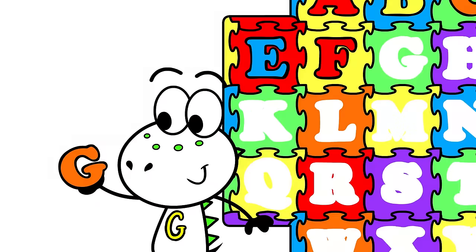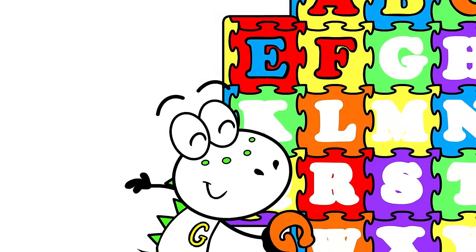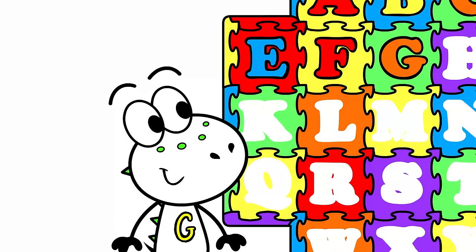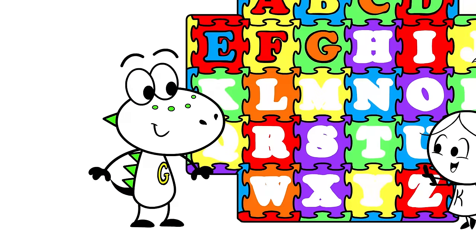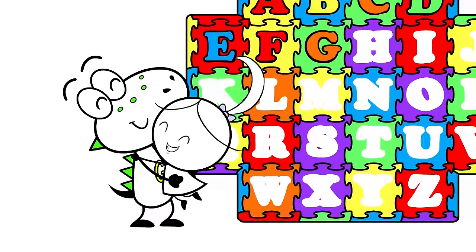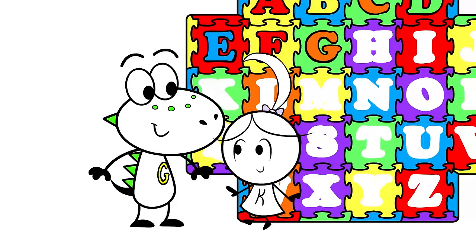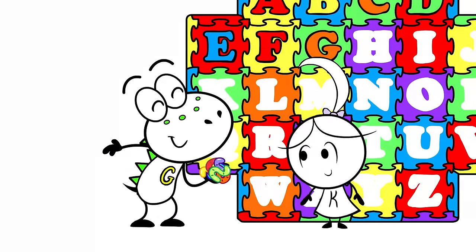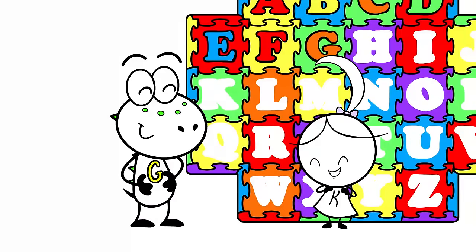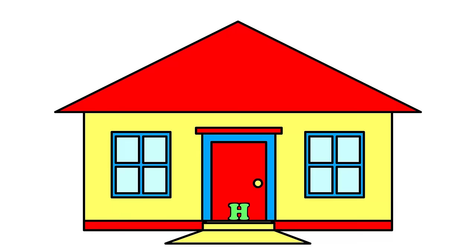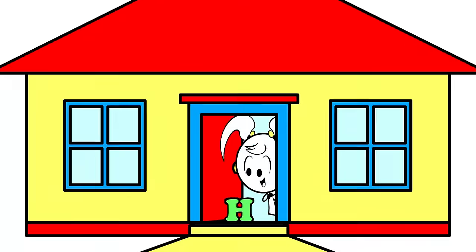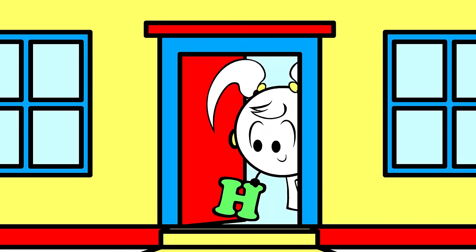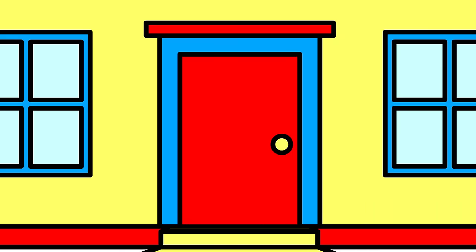G is for gator. G, gator. G, gator. H is for house. H, house. H, house.